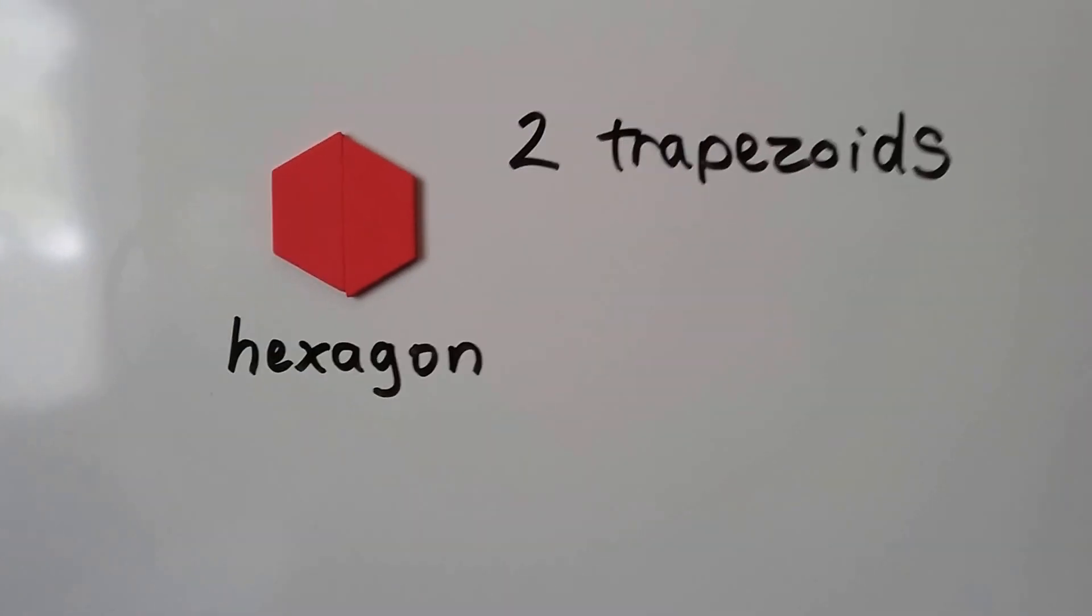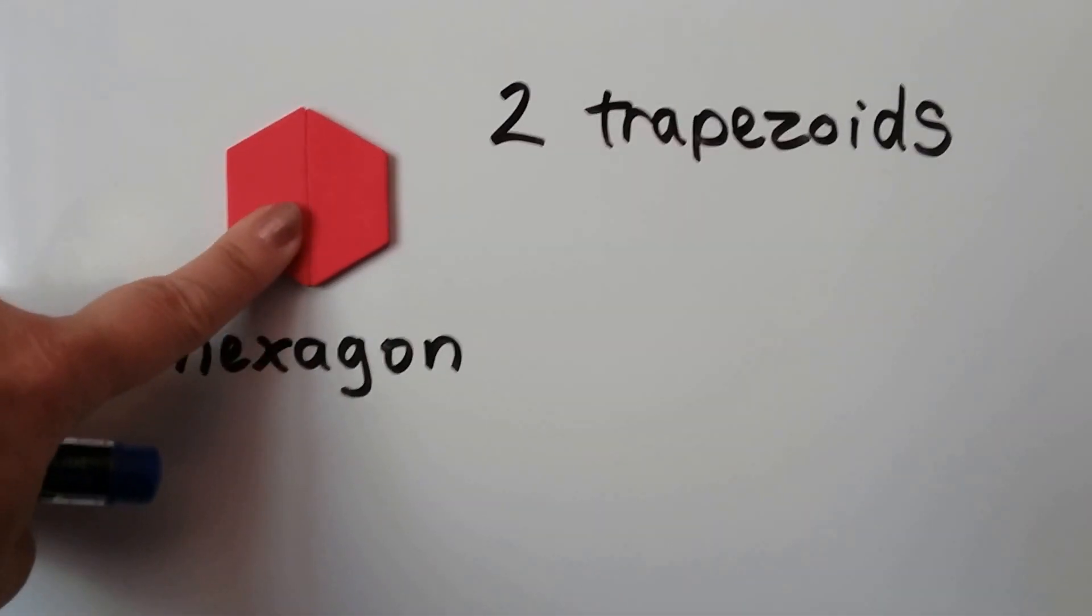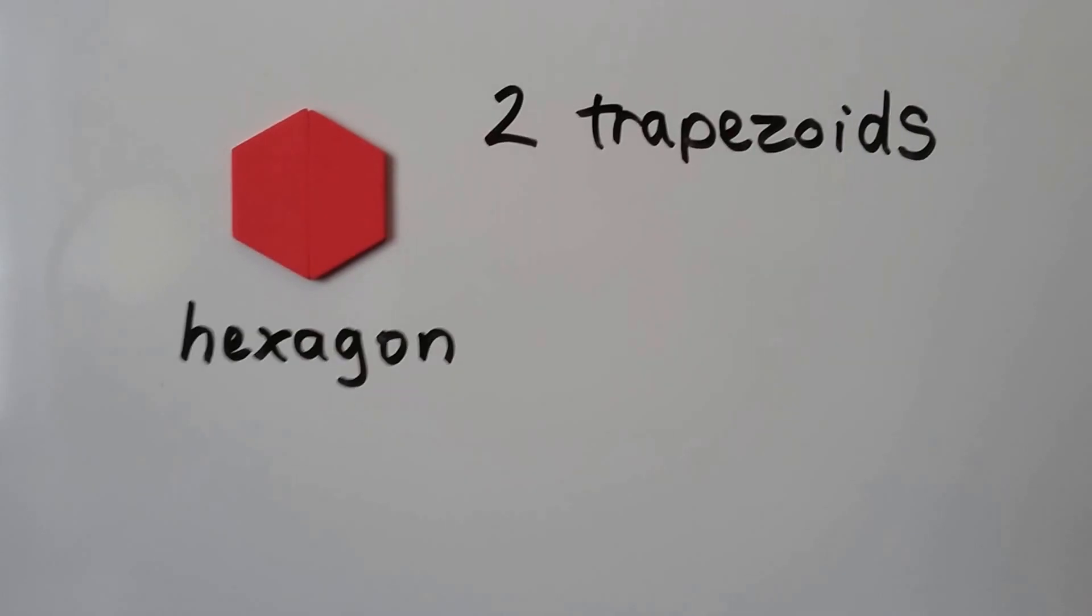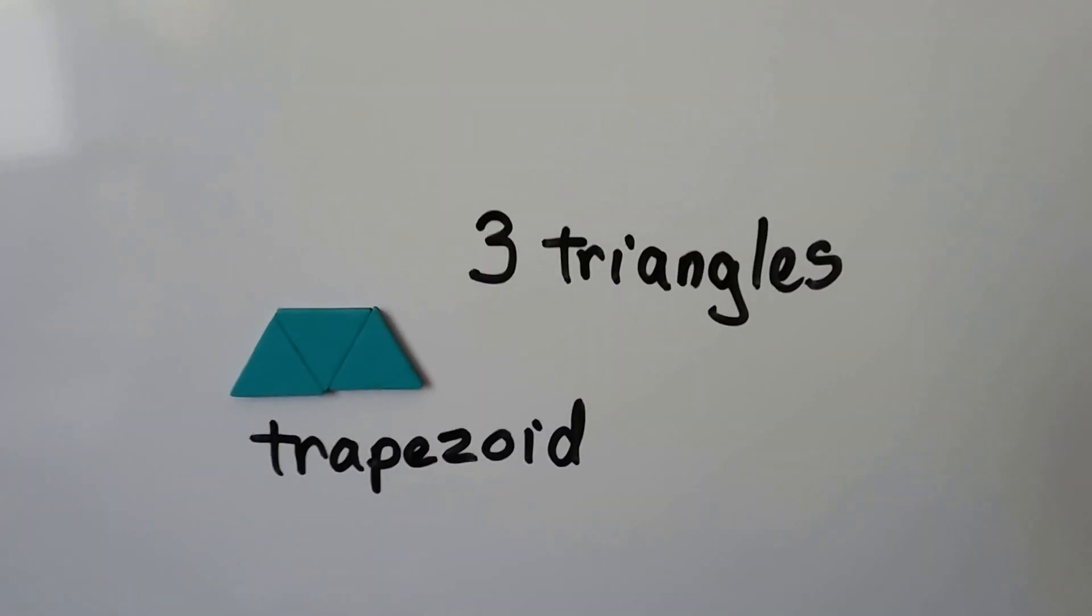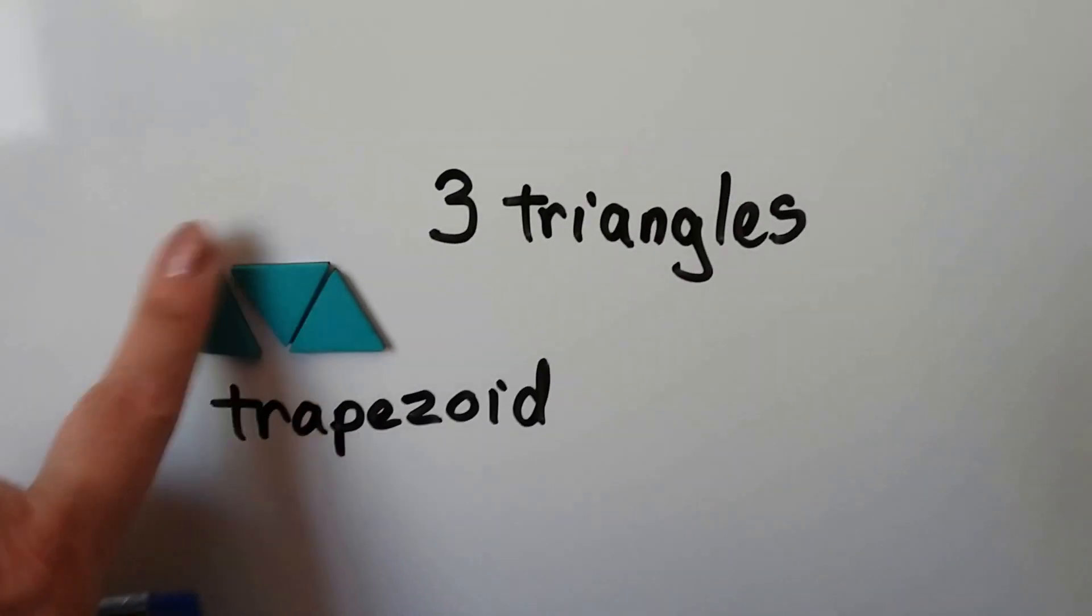I took two trapezoids and I made a hexagon by putting them together. I took three triangles and made a trapezoid.